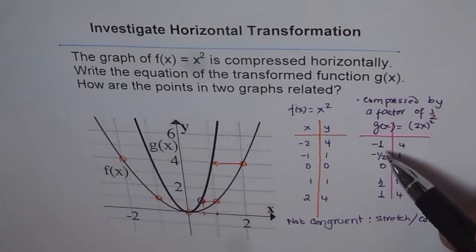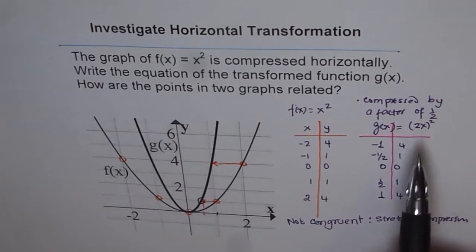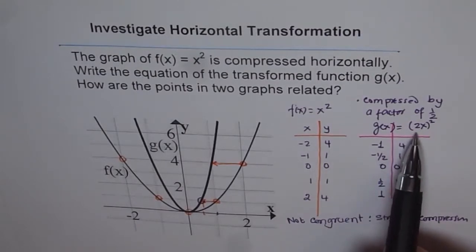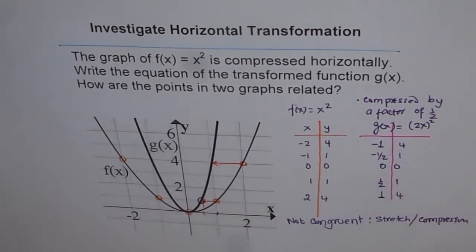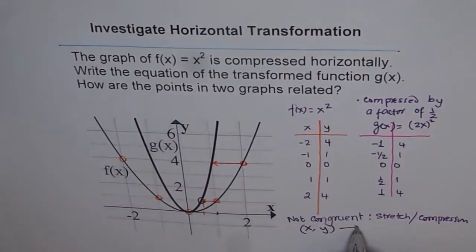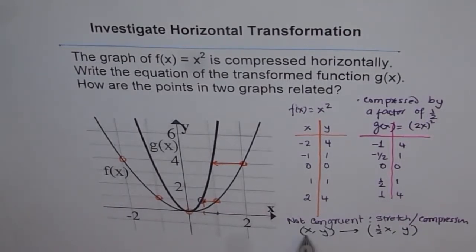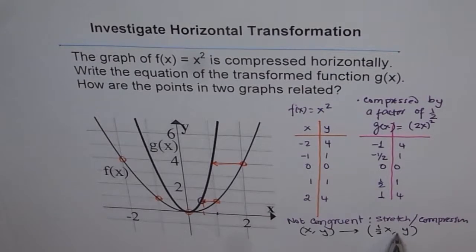Remember: if the transformation is compressed by a factor of 1/2, the original points (x, y) get transformed so that the x-points are multiplied by a factor of 1/2 while the y-points remain the same. That is the transformation of each and every point from f(x) to g(x) when the compression is by a factor of 1/2.